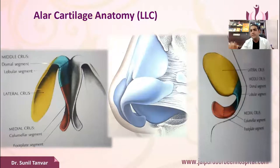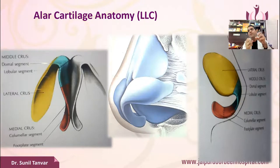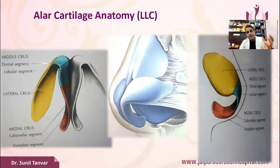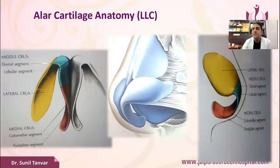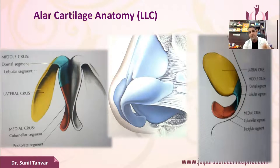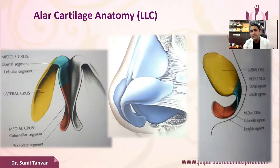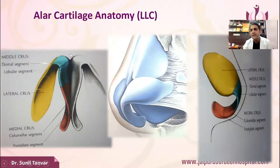Sometimes due to advancing age, surgery, infection, or trauma, the fatty tissue gets disrupted and the patient consequently develops tip ptosis. This is the significance of the medial crus. It is a very important part because we make incisions on the skin over the medial crus. If you want to strengthen the tip, you can modify the medial crus using a septal extension graft or columella strut.